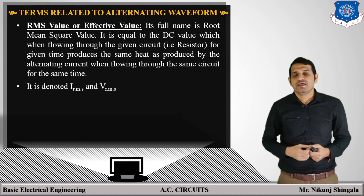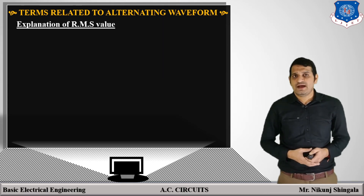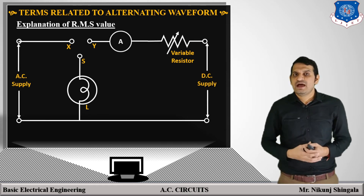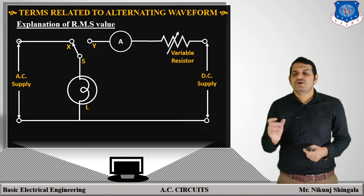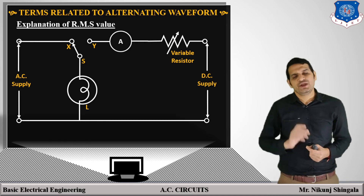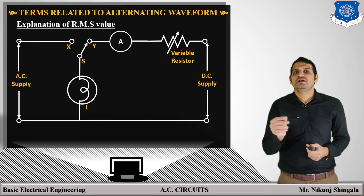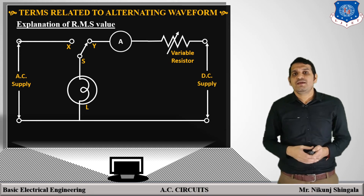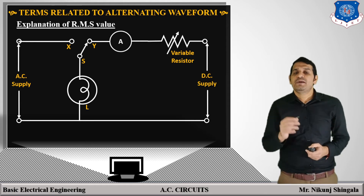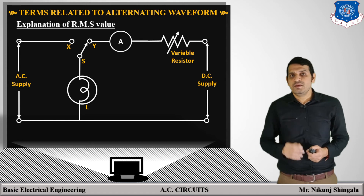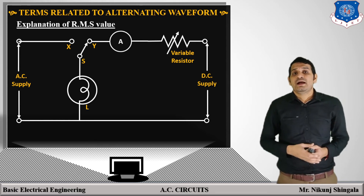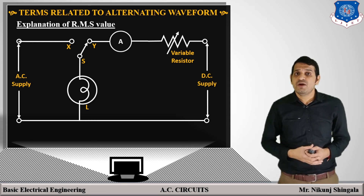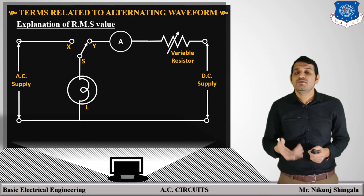It is denoted by I_RMS and V_RMS. To explain RMS value, consider a basic setup: L is a filament lamp, S is a switch, and X and Y are two contacts. Initially the lamp is connected to AC supply, and for some time AC supply is given producing a certain brightness. Then DC supply is given via the switch. The value of the resistor is changed until we achieve the same brightness as with AC supply. At that point the current noted is nothing but the RMS value — the DC value which produces the same amount of heat as the AC current in the given circuit for the given time.